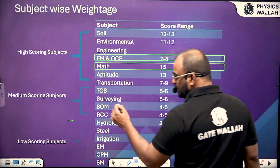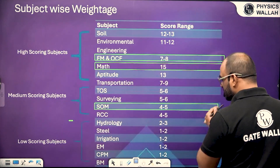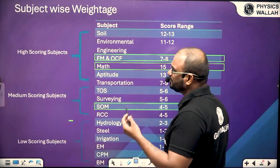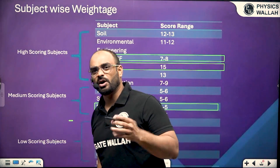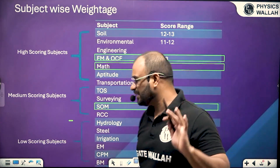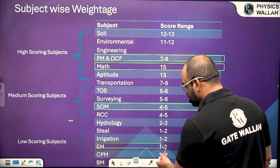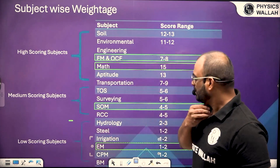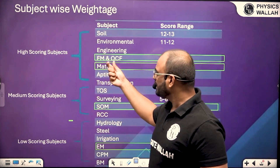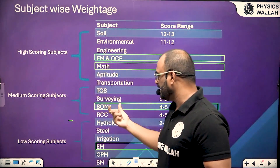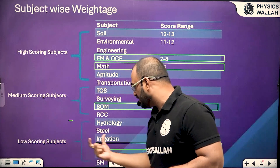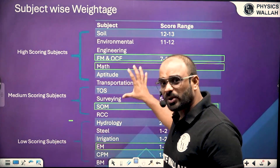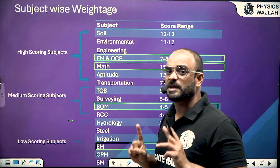Then we have strength of material — try to cover this too. You can also cover engineering mechanics in your early duration if you want; if you want to ignore it, there is no problem, but it is also one of the fundamental subjects. So basically there are four fundamental subjects: FM and maths in the high scoring category, strength of material in the medium scoring category, and engineering mechanics in the low scoring category.